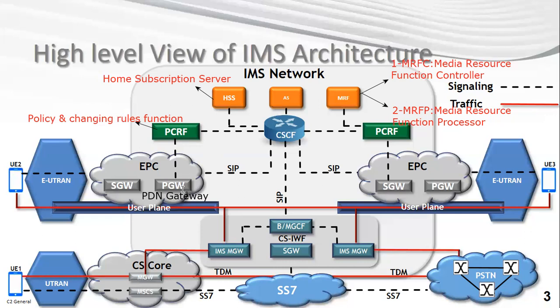Since IMS is used for voice calls, special cases may happen — such as originating or receiving a call to or from a CS user. If a user attached on 4G wants to talk to a user attached on CS, there will be an interaction between the CS core in 2G/3G networks and the IMS or EPC. That is why we have the CS interworking function.